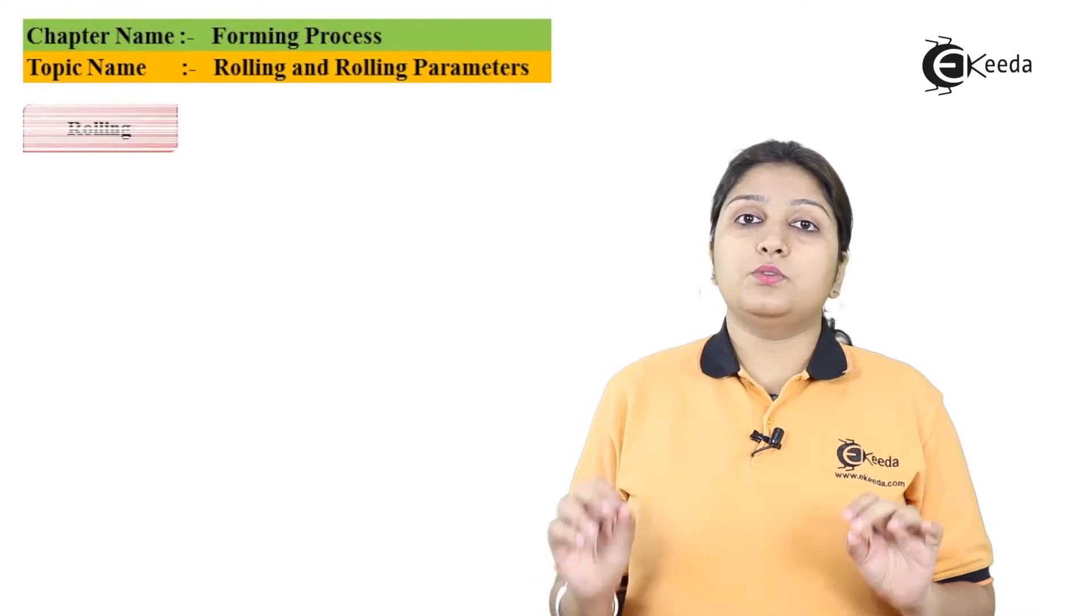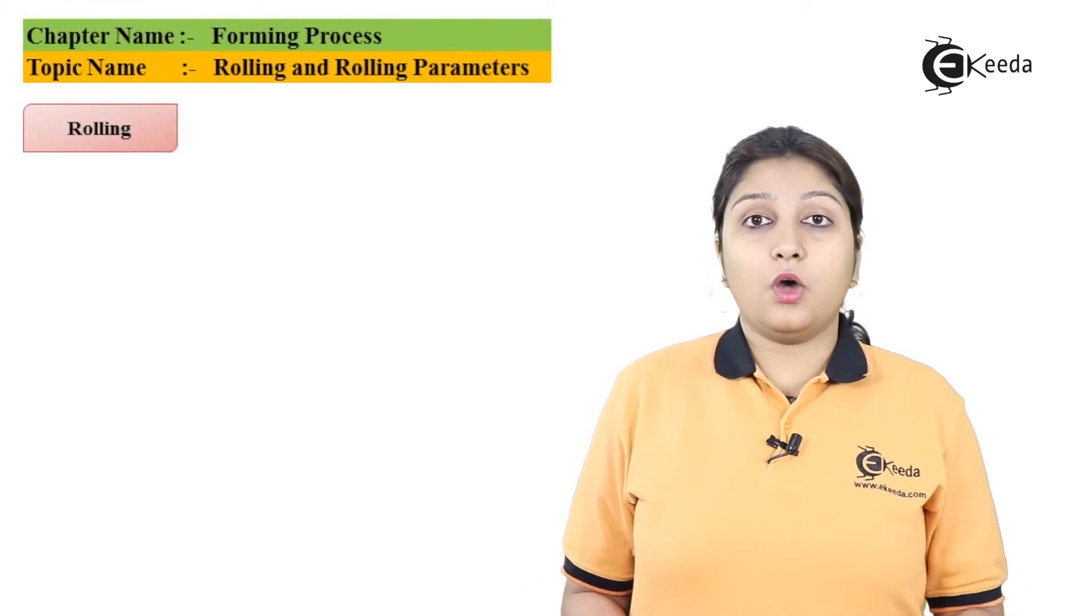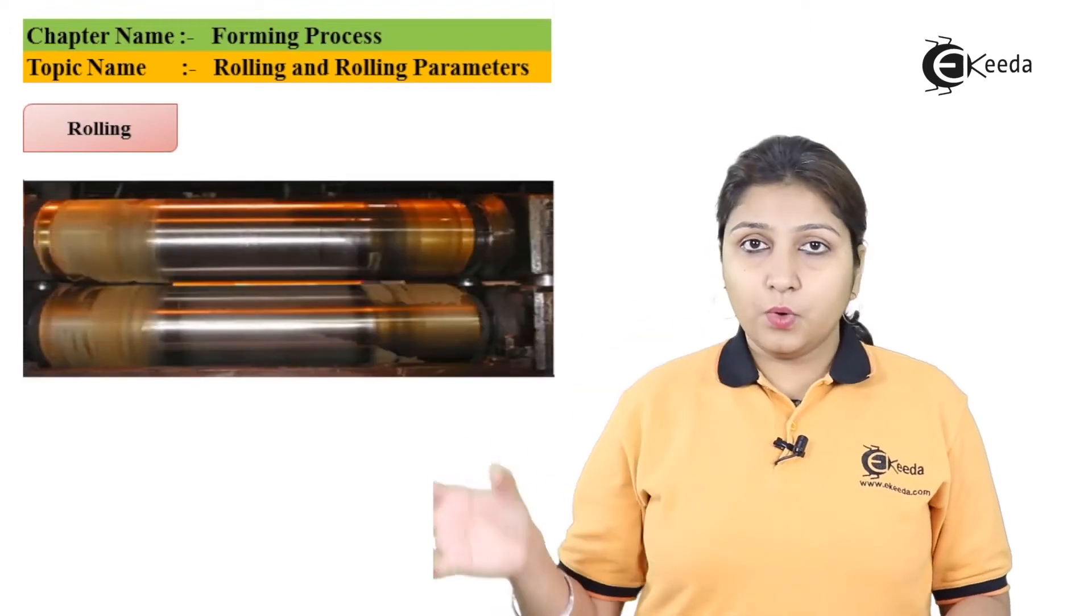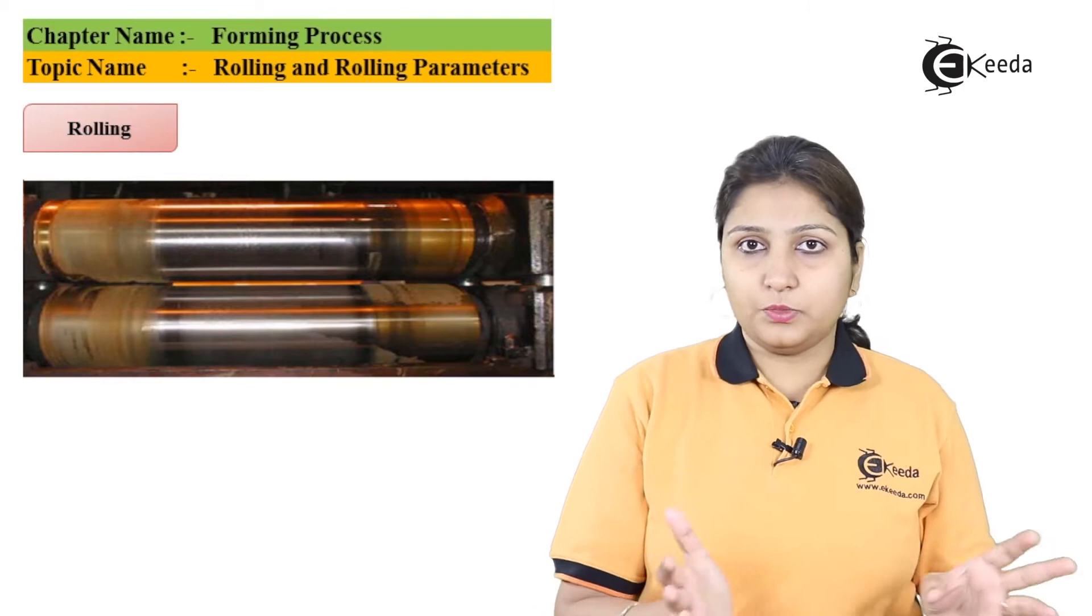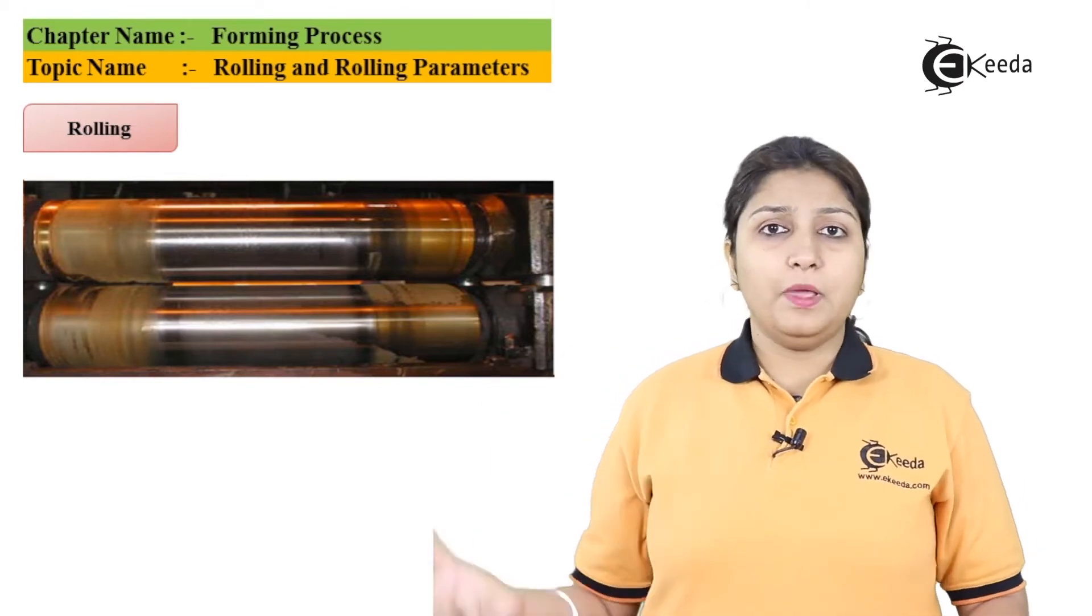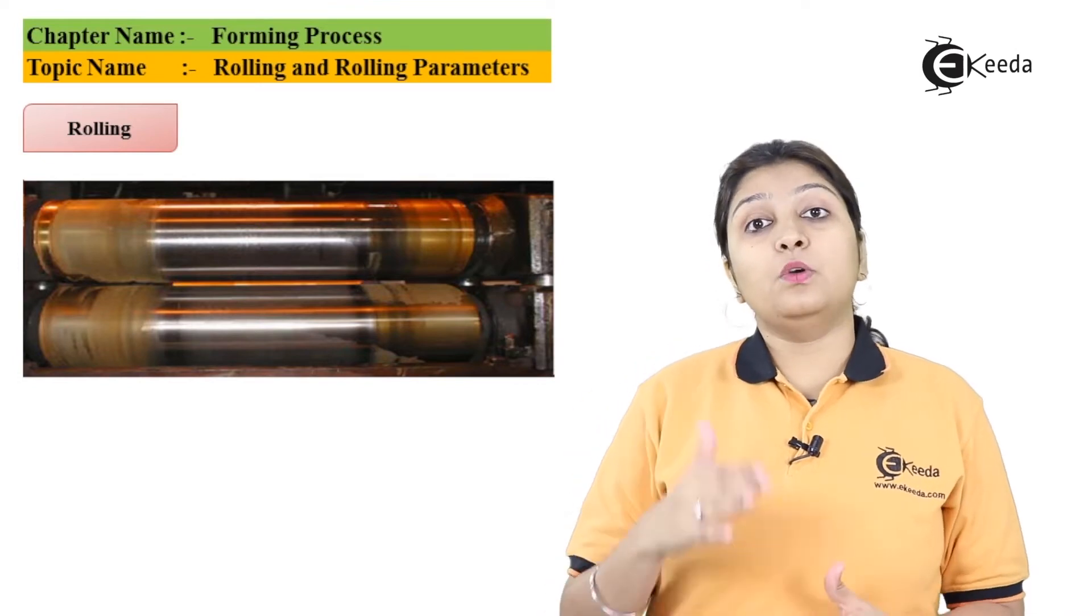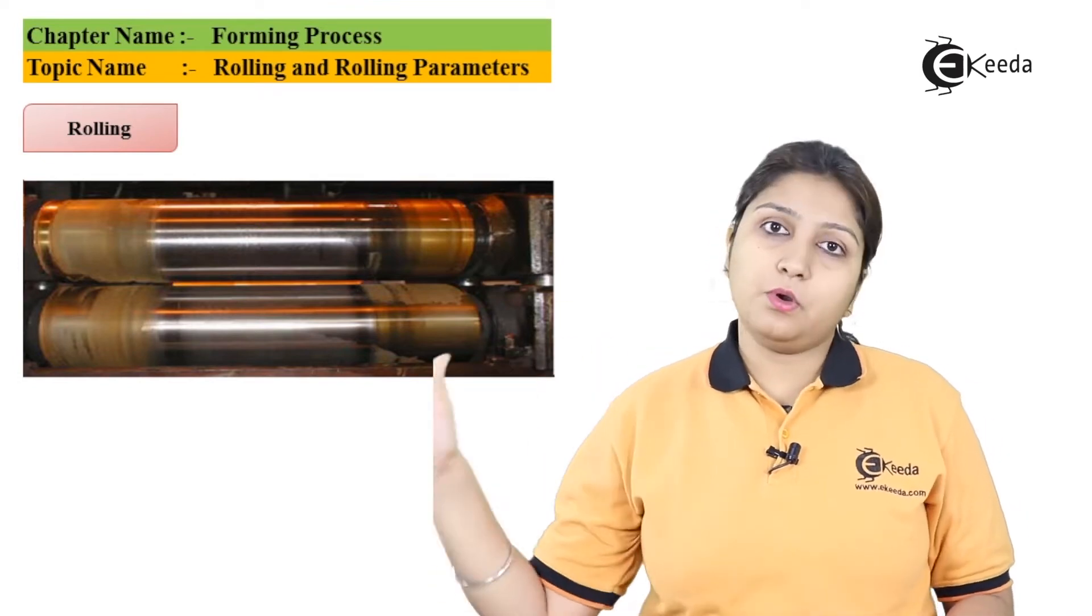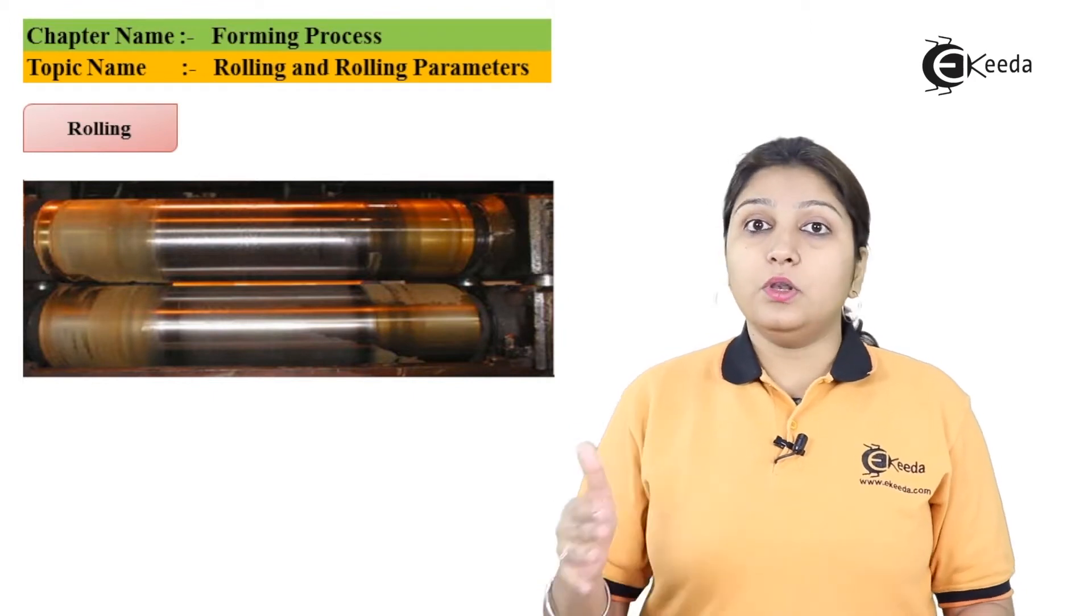So first we will talk about what is rolling. In this, a normal ingot or a normal slab is converted. If I talk about ingot or a slab, it is a bigger part, like a bigger object. It is converted into small blooms, billets or rods. How it is converted? By passing it through different rolls, n number of rolls, how much thickness is required and how much your roll is to be passed.